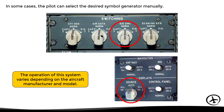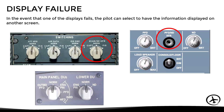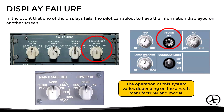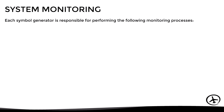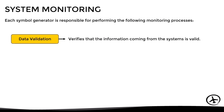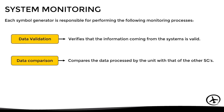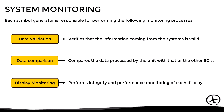If one of the displays fails, the pilot can select to have the information displayed on another screen, though this also varies by manufacturer and model. The symbol generators not only process the information, but also monitor the system. Each symbol generator performs the following monitoring processes: data validation, which verifies that the information coming from the systems and sensors is valid; data comparison, which compares the data processed by the unit with that of the other symbol generators; and display monitoring, which monitors the integrity and performance of each display.